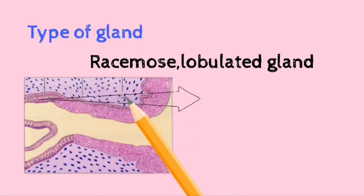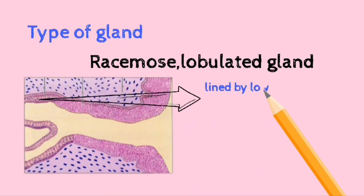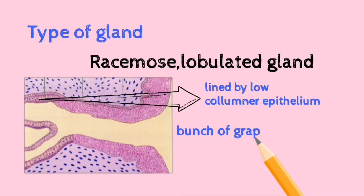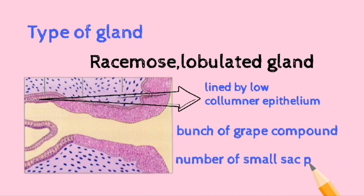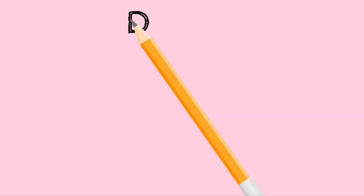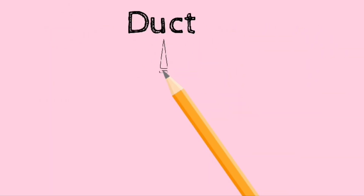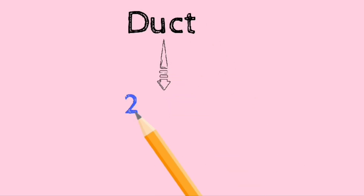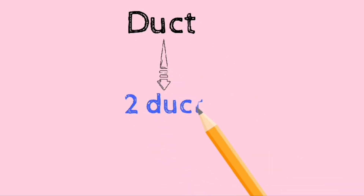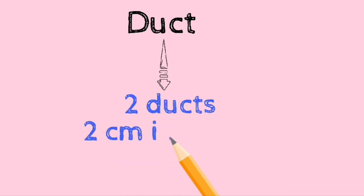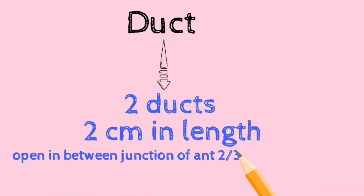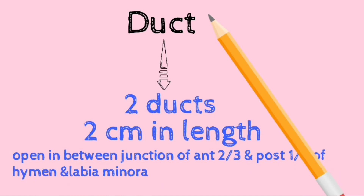The Bartholin gland is a racemose lobulated gland. It is lined by low columnar or cuboidal epithelium — a bunch-of-grapes compound structure, with a number of small sacs present in this gland. Each gland has one duct, so in total there are two ducts.